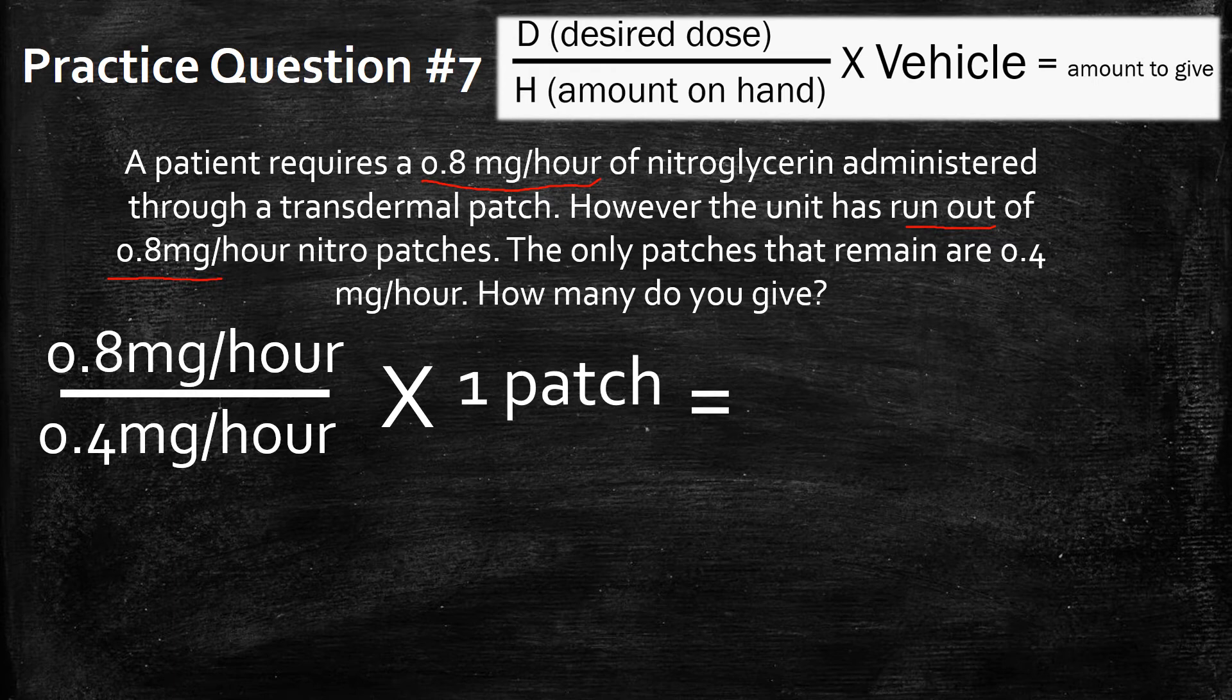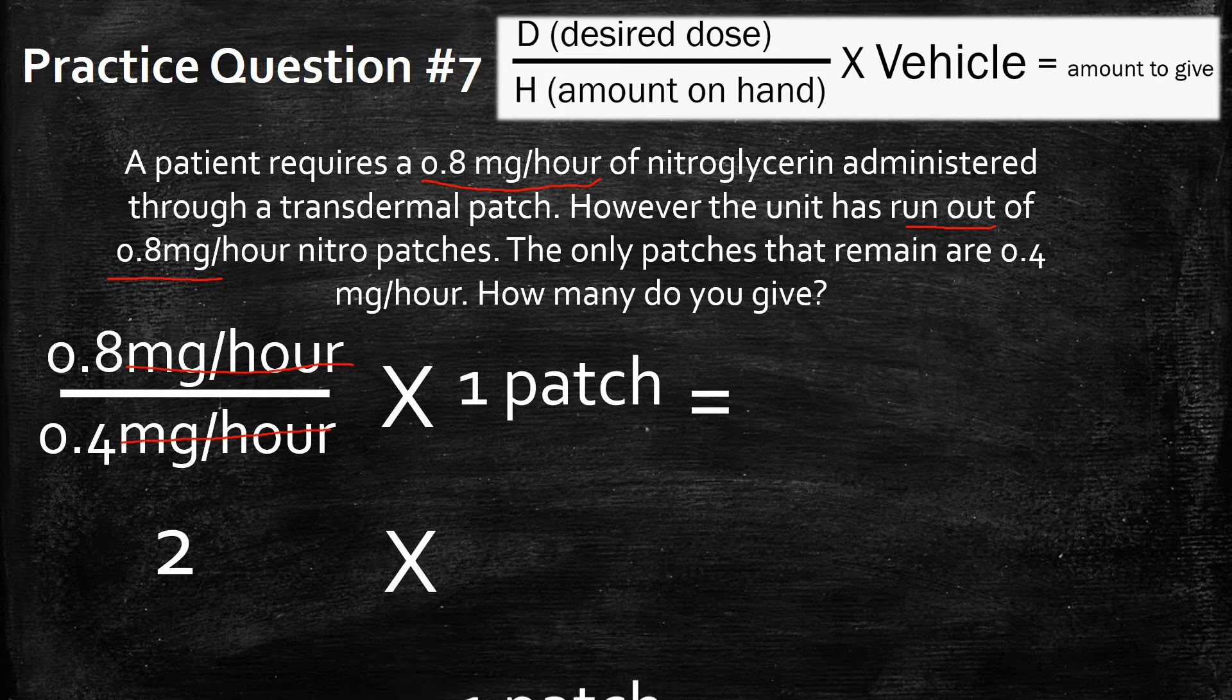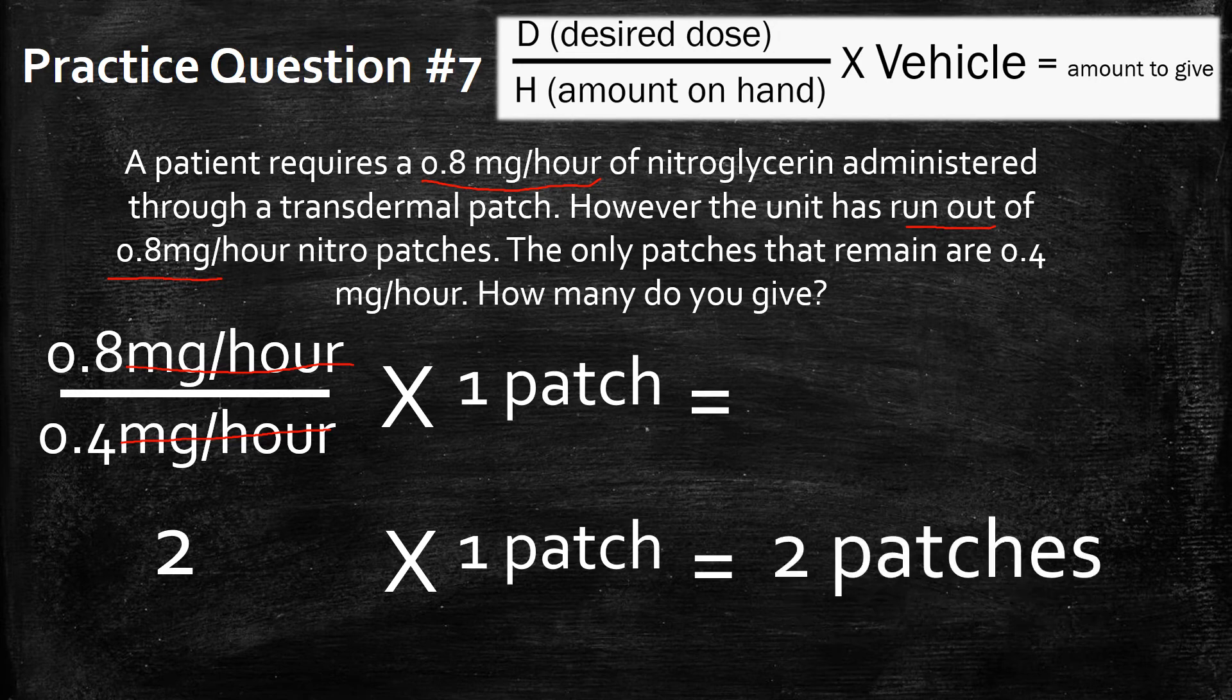once again, all we do is solve. So 0.8 divided by 0.4 is going to give you 2. These will obviously scratch out. We're going to multiply that by the vehicle, which is one patch. And that's going to give us 2 patches.